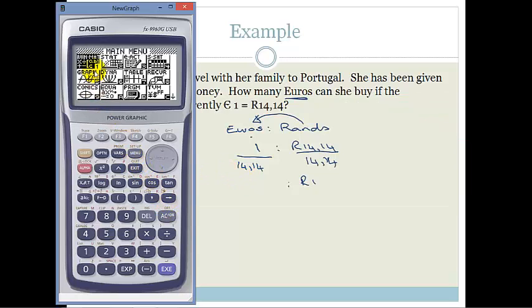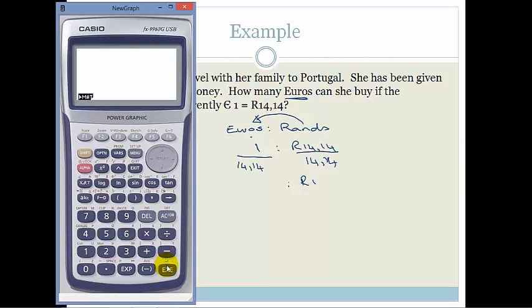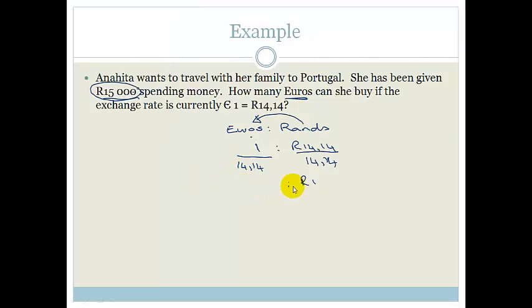So therefore, we now have that 1 Rand goes to, and let's get our calculator out. So this becomes 1 divided by 14.14, and it gives us 0.071 or 0.07. So therefore, 1 Rand goes to 0.07 Euros.